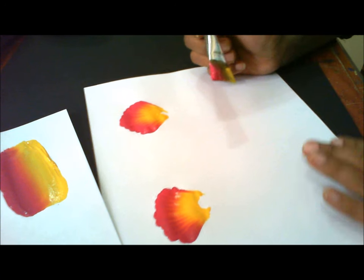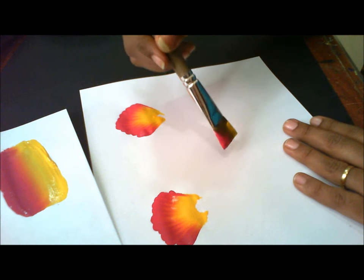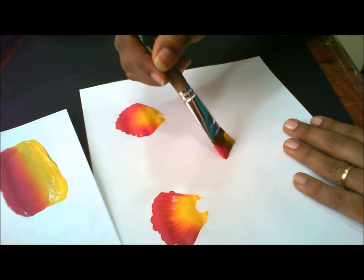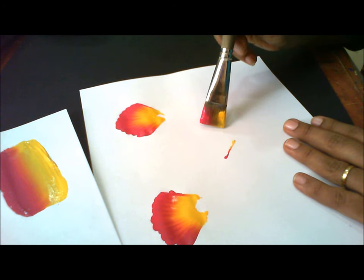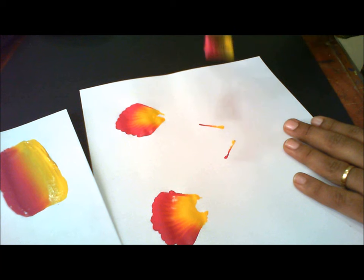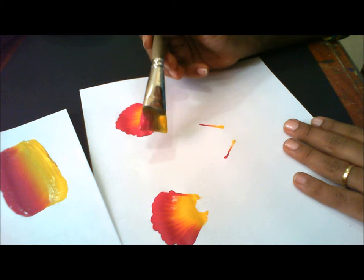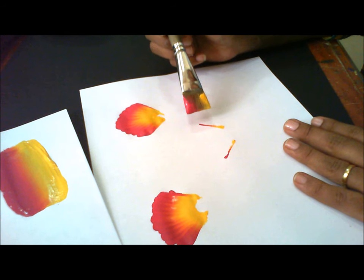I will show you one more time and then we will go for a flower. Start it with an angle. Maybe initially you can keep this kind of guidelines when you move up then come down.